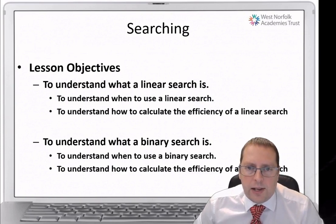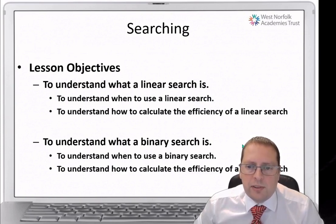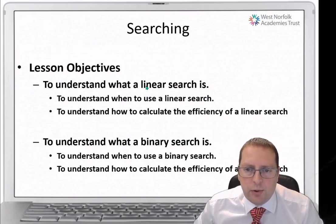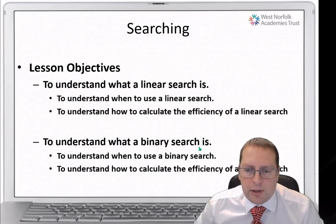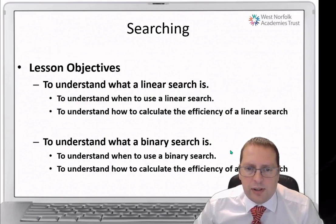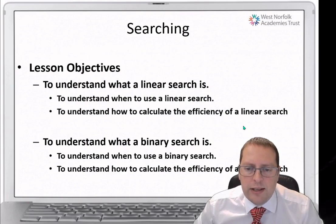We're now going to look at how searches operate on a computer. There are two types of searches we're going to try and understand today. The first one is a linear search and the second one is a binary search, along with the advantages and disadvantages of each type of search.